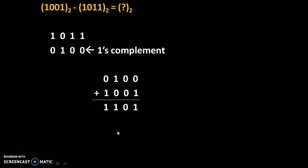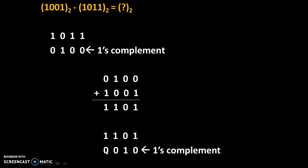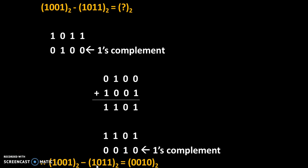Rule No. 4 is applicable: if carry is not generated, we will take one's complement of the final answer. The final answer is 1101. The one's complement of it is 0010 — we replace each 1 by 0 and each 0 by 1. This is our final answer. Therefore, 1001₂ minus 1011₂ equals 0010₂.